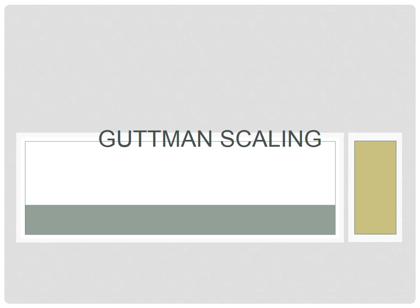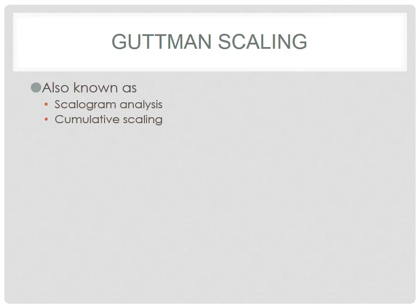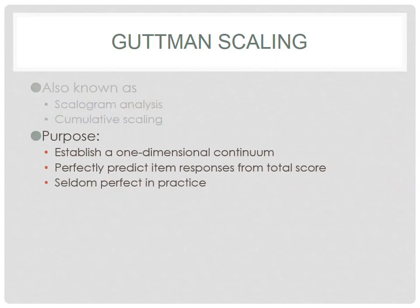Another one-dimensional scaling process is what is called Guttman scaling. Guttman scaling is also known as scalogram analysis or cumulative scaling. The purpose is to establish a one-dimensional continuum in which you can perfectly predict item responses from the total score. Although it's not in practice possible to perfectly predict item scores from the total scores, that is the essential purpose of a Guttman scale.